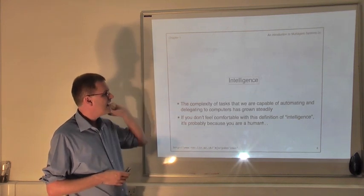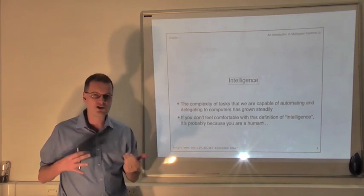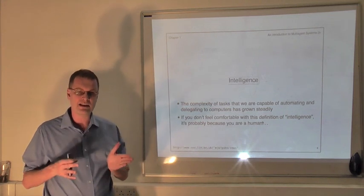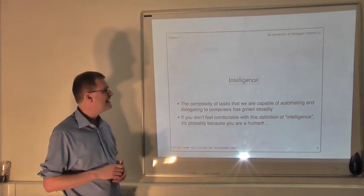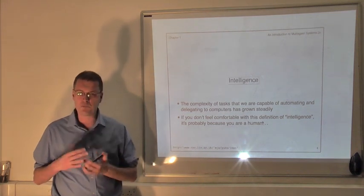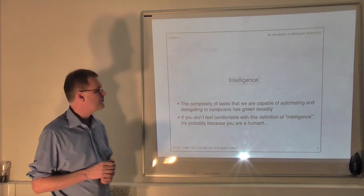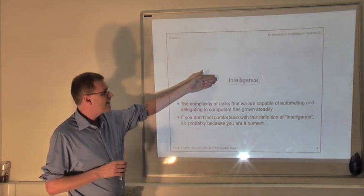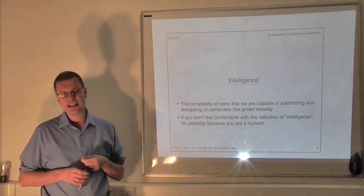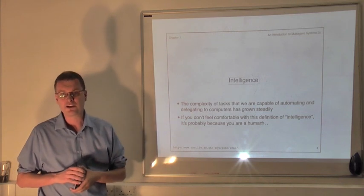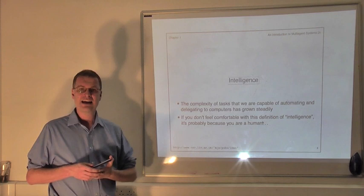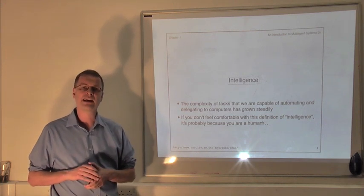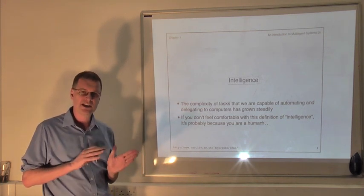The third trend is not so much a technological trend. The first two, ubiquity interconnection, are very much technology push trends. Intelligence is more of a pull trend. It's what we want computers to do. So here I have to be a little bit cautious about the word intelligence because of course there is a large area called artificial intelligence which is about constructing devices that are capable of human-like intelligence. And here I mean something slightly weaker.